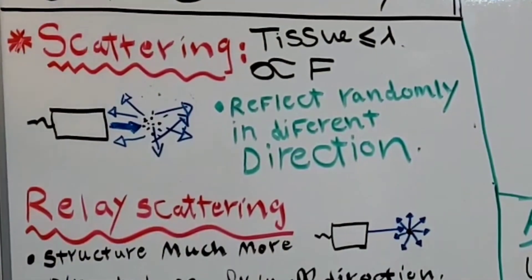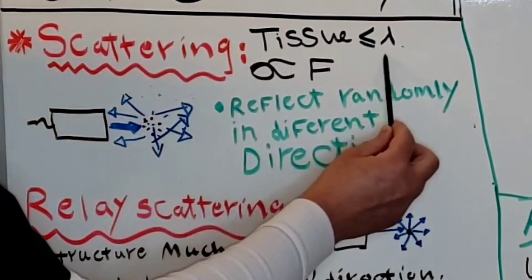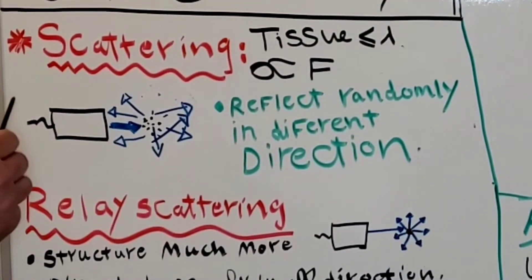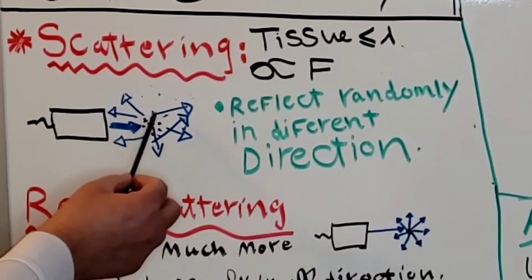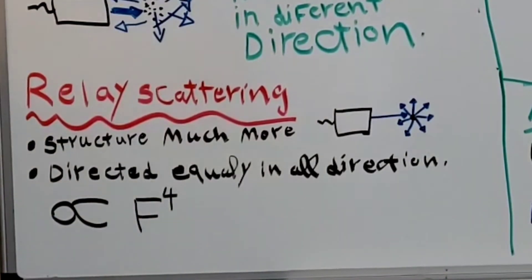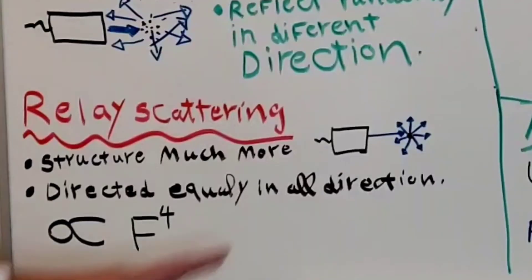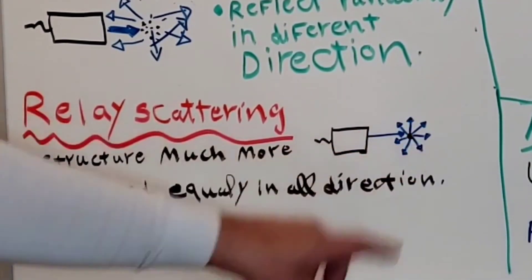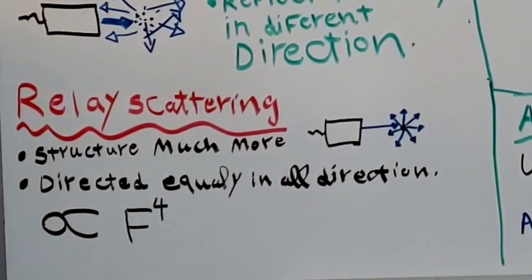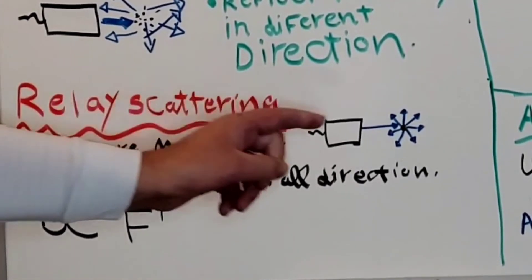Scattering happens when the tissue size is less than or equal to the wavelength (lambda). When that happens, the reflection moves randomly in different directions. Rayleigh scattering happens when the structure is much smaller than the wavelength. Rayleigh scattering is directly related to frequency to the power of 4, and sound waves travel equally in all directions. An example of Rayleigh scattering is the red blood cell, because it is much smaller than the wavelength.